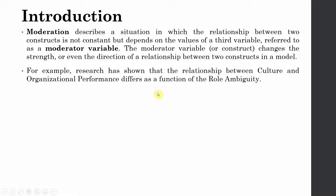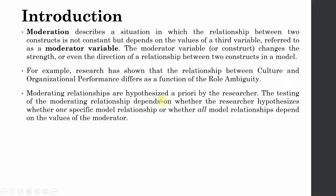Moderating relationships are hypothesized a priori by the researcher. The testing of a moderating relationship depends on whether the researcher hypothesizes that one specific model relationship — or all model relationships — depend on the value of the moderator. The test we use is dependent on whether a single relationship is being moderated or whether all relationships in the model are moderated.